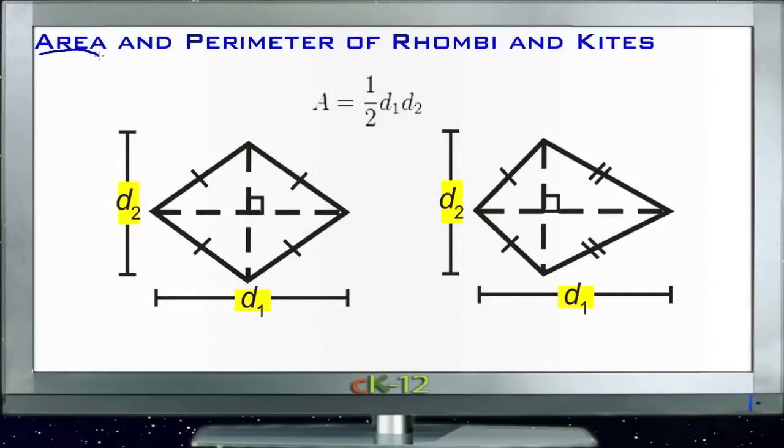All right, to find the area of a rhombus, which are rhombi when they're plural, and find the area of kites,